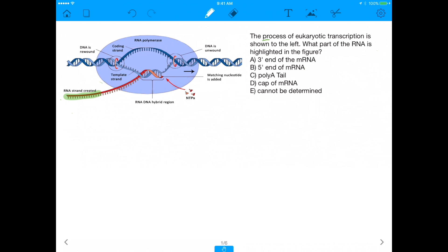So it says, the process of eukaryotic transcription is shown to the left. What part of the RNA is highlighted in the figure? So this is the part I'm referring to, this highlighted portion right here. Yeah, is what I'm talking about.